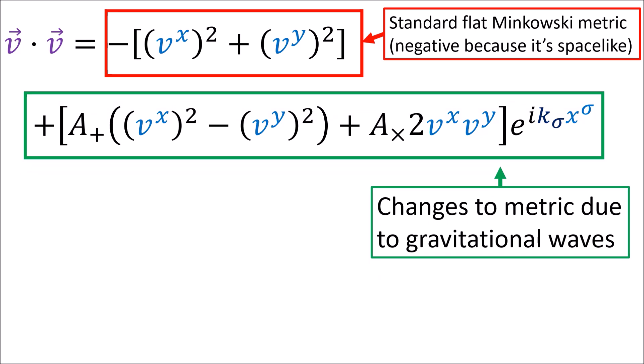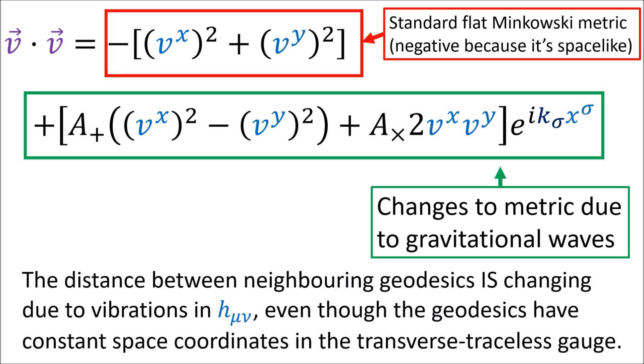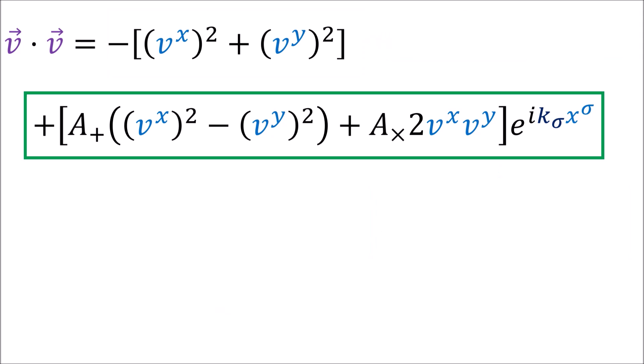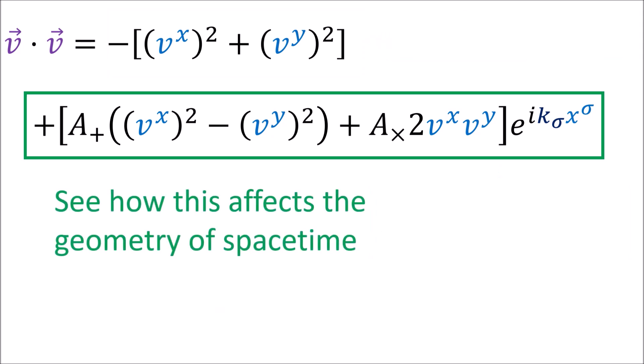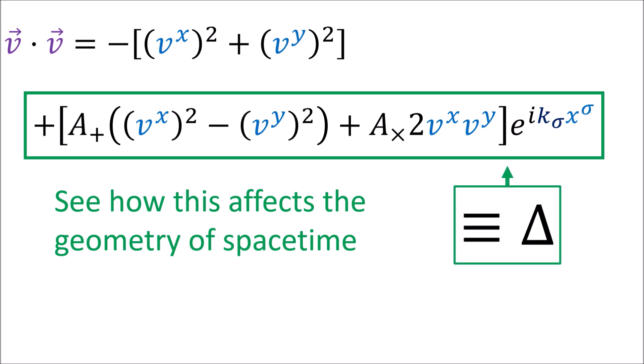So the first part of this result for the squared length of the vector is the standard result from the flat Minkowski metric, and it has a negative sign because the displacement vector v is a space-like vector. The rest of the terms are the changes in the metric due to gravitational waves. So we can see that the distance between the two neighboring geodesics is in fact changing due to vibrations in the h part of the metric, even though the geodesics have constant space coordinates in the transverse traceless gauge. To understand the effect of these waves, I'm going to look at the changes in geometry due to this second part of the metric involving plane waves, which I'll call delta for short.